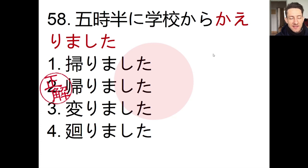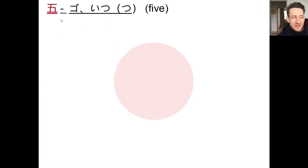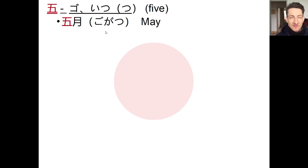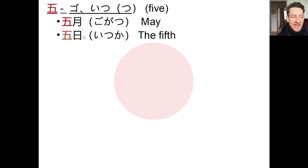Now let's take a closer look at some kanji characters in the sentence. The first is the character for the number five 「五」. We use it all the time — for example, gogatsu would be May. Saying months in Japanese is easy: just use the number plus gatsu. So January is ichigatsu, February nigatsu, March sangatsu, and so on. You can also add the character for day — so gogatsu no itsuka is the fifth of May.